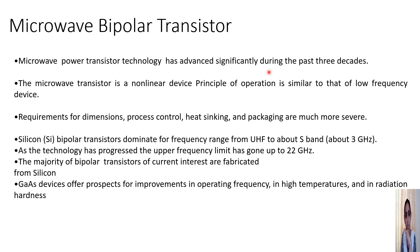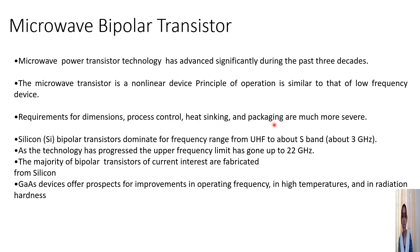Now the microwave bipolar transistor. At high frequency ranges we employ the bipolar transistor, and this technology has advanced significantly during the past three decades. The principle of operation is similar to that of low frequency devices. All the basic principles learned in bipolar transistor theory remain the same for microwave transistors, but the requirements for dimension, process control, heat sinking, and packaging are much more severe at high frequency. Silicon bipolar transistors dominate for frequency ranges from UHF to about S-band, approximately 3 GHz, and as technology has progressed the upper frequency limit has gone up to 22 GHz.